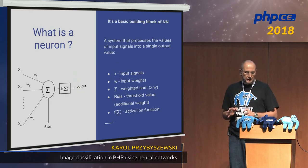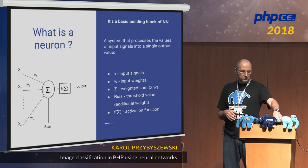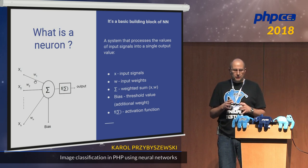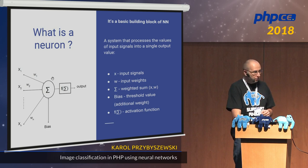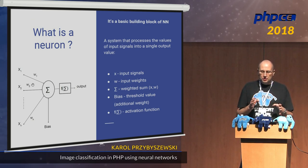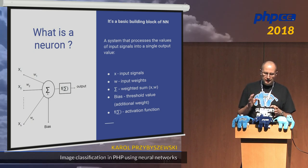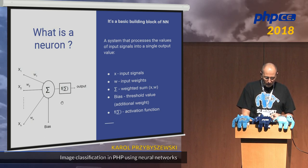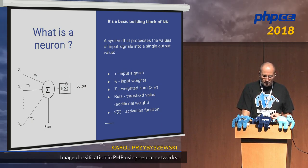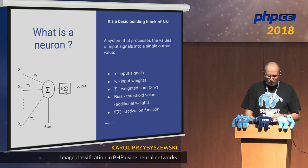What is a neuron? It's the building block of neural networks. It's a system that processes the values of input signals and converts those input signals into a single output value. For the neuron, you have the input signals marked by X, then you have the input weights — a weight tells you how important a particular input is. Then you have the weighted sum: you multiply each input by its weight and add them all up. You also have the bias, which you can see as a threshold value or additional weight. And at the end, you have the activation function, which determines whether it's worth passing the signal through or whether it should be zero.